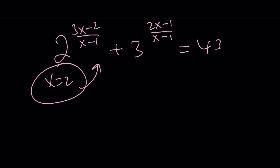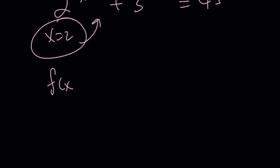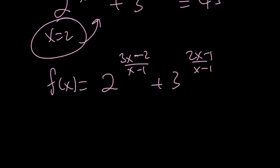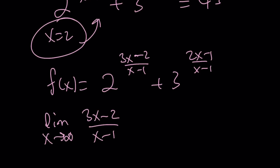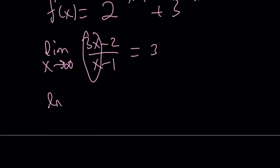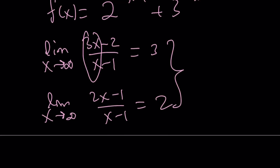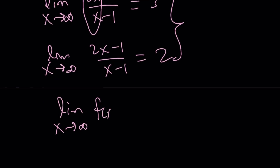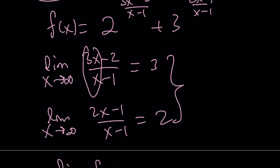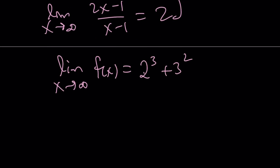Now let's look more deeply at the function f(x) equals 2 to the power of (3x minus 2) over (x minus 1), plus 3 to the power of (2x minus 1) over (x minus 1), and examine some limits. The limit as x approaches infinity of (3x minus 2) over (x minus 1) is 3 — it doesn't matter if it's positive or negative infinity, because of the leading coefficients. Similarly, the limit of (2x minus 1) over (x minus 1) as x approaches infinity is 2. Therefore, the limit of f(x) as x approaches infinity is 2 to the 3rd plus 3 squared, which is 8 plus 9 equals 17.